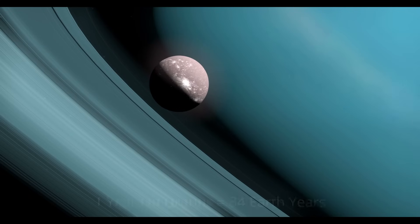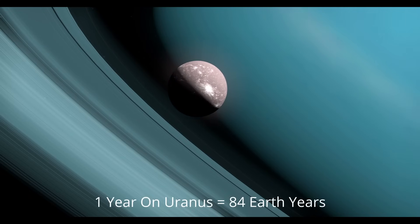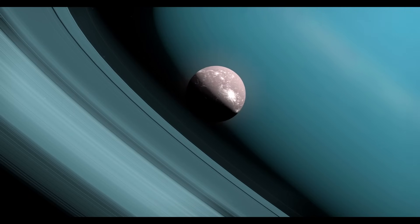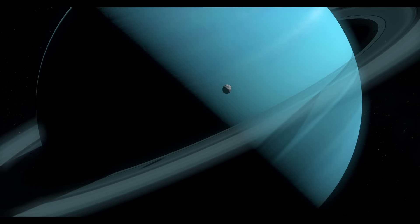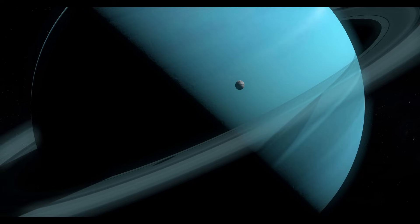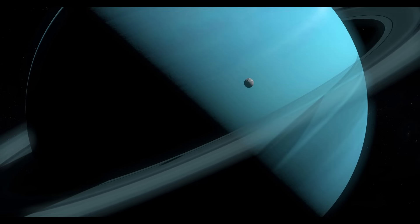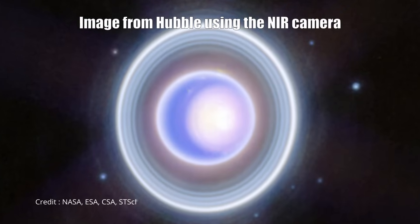A year on Uranus lasts 84 Earth years, combined with its extreme tilt. This results in the most extreme seasons imaginable. For 21 straight years, one pole is bathed in continuous sunlight, an endless summer day.